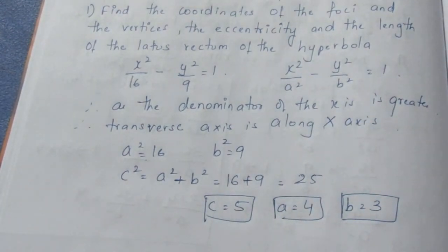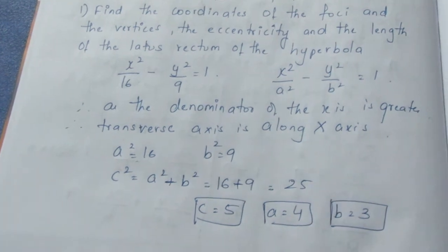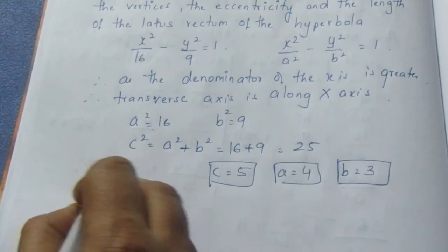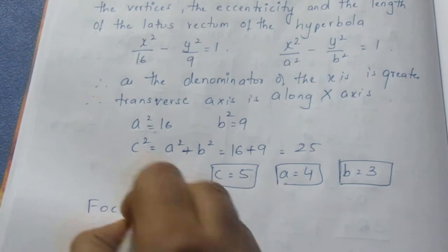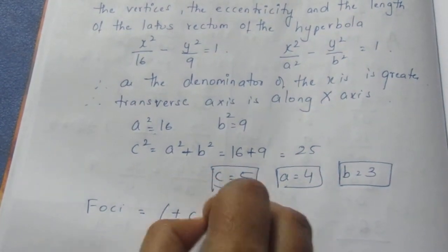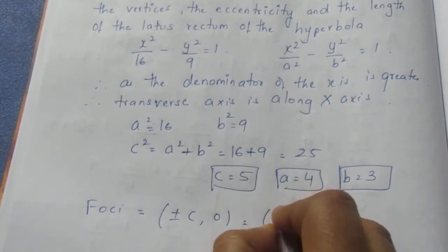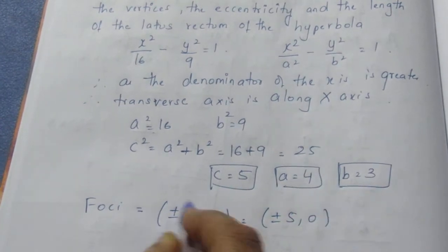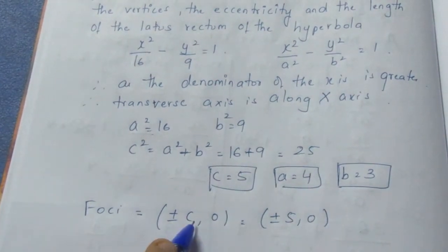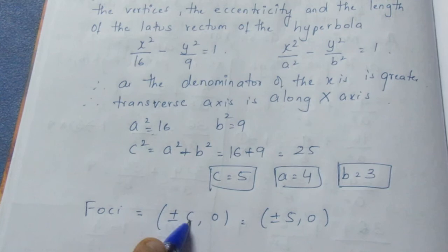So we have found c, a, and b. Let me go with what is asked. They have asked for foci. The formula is (±c, 0), which is (±5, 0). Since the transverse axis is on the x-axis, c appears in the x-coordinate.